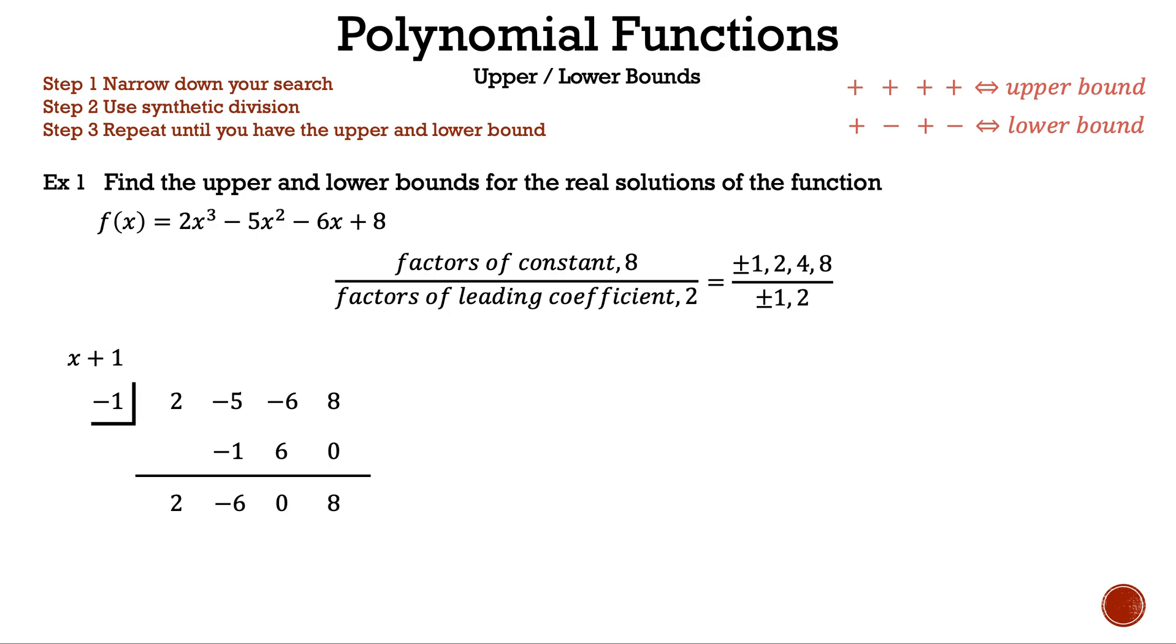Let's take a closer look at these numbers. Remember, we want positive, negative, positive, negative. We have positive, negative, positive, positive, or positive, negative, negative, positive, because the 0 can be either positive or negative. We're almost there since we only need the last number to be negative. So what number should we choose next?